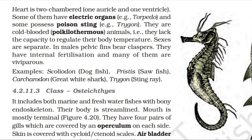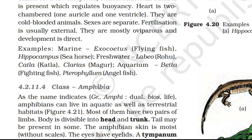Topic 4.2.11.3: Class Osteichthyes. It includes both marine and freshwater fishes with bony endoskeleton. Their body is streamlined. Mouth is mostly terminal. They have four pairs of gills which are covered by an operculum on each side. Skin is covered with cycloid or ctenoid scales. Air bladder is present which regulates buoyancy. Heart is two-chambered — one auricle and one ventricle. They are cold-blooded animals. Sexes are separate. Fertilization is usually external. They are mostly oviparous and development is direct. Examples: marine — Exocoetus (flying fish), Hippocampus (seahorse); freshwater — Labeo (rohu), Katla, Clarias (magur); aquarium fishes — Betta (fighting fish) and Pterophyllum (angelfish).